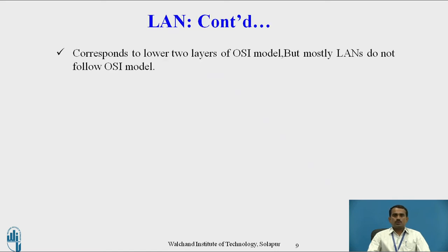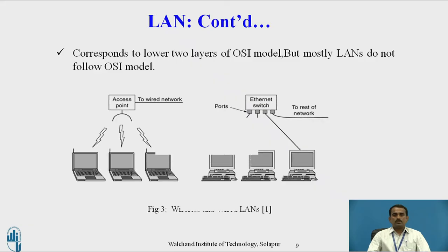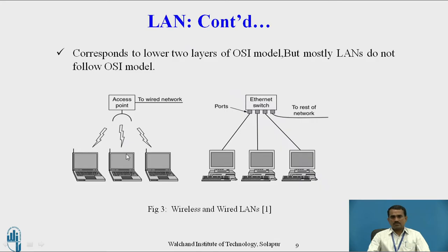Cabling and equipment belong to the LAN owner. LAN corresponds to the lower two layers of the OSI model, but mostly LAN does not follow the OSI model. In a wireless LAN, an access point is used, and devices such as laptops get connected to this access point without using any cables.